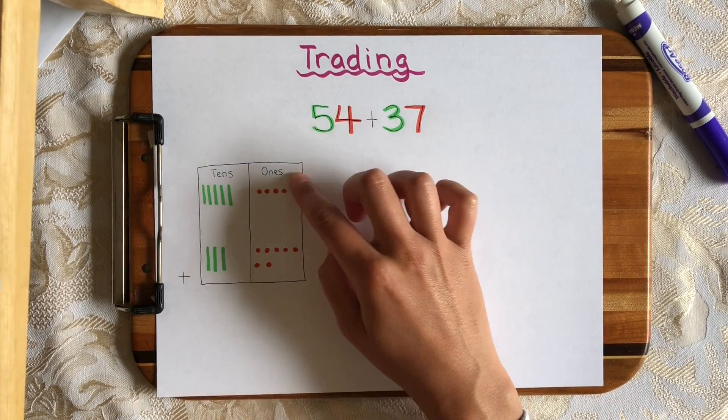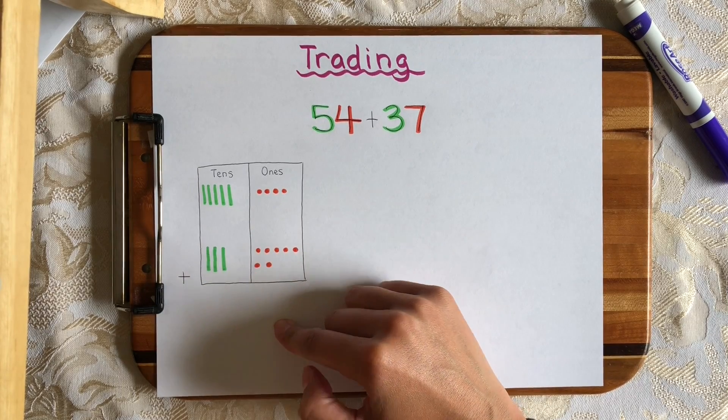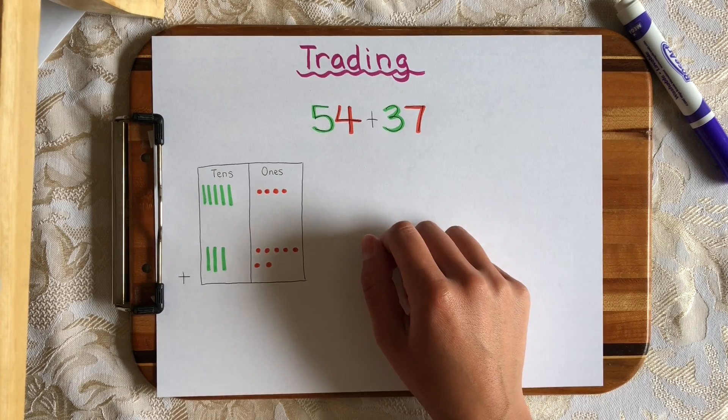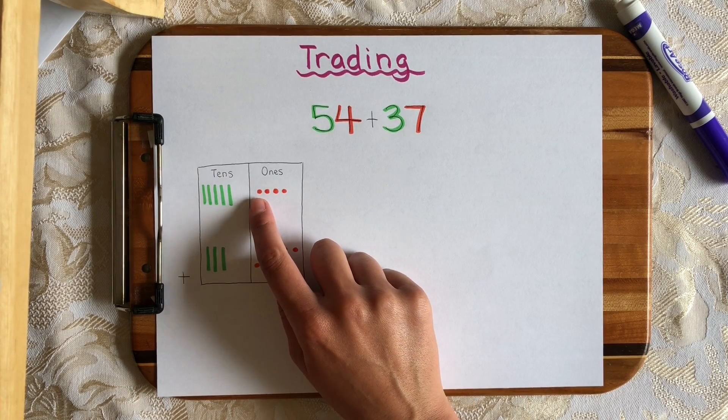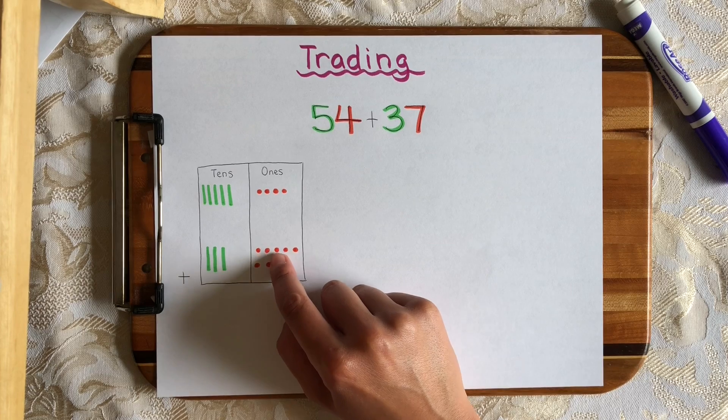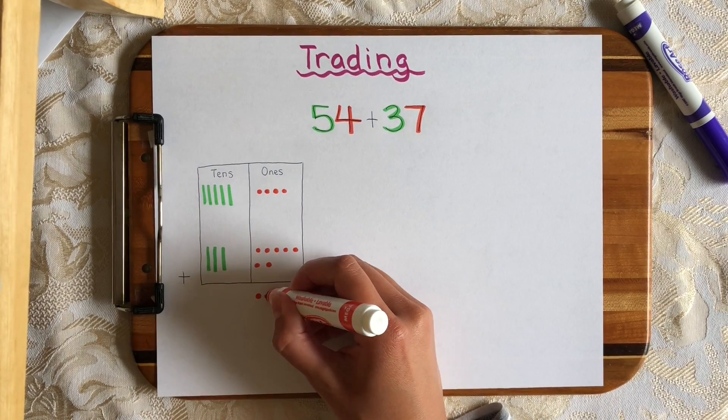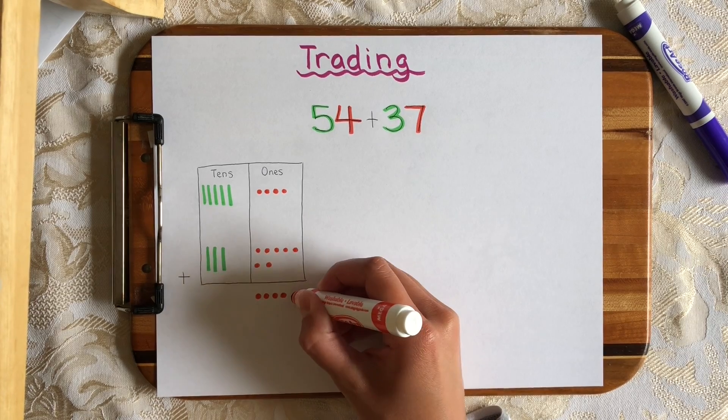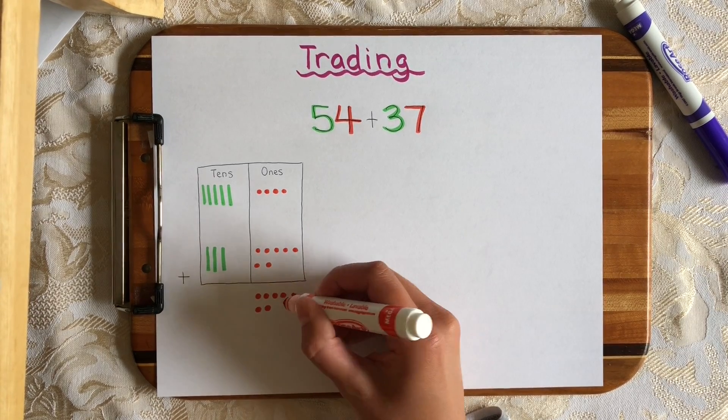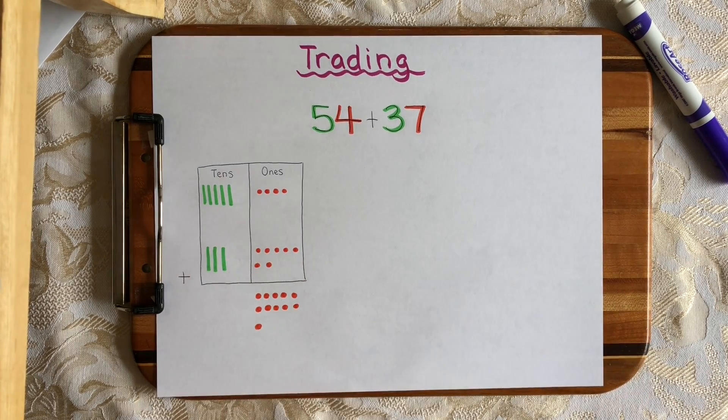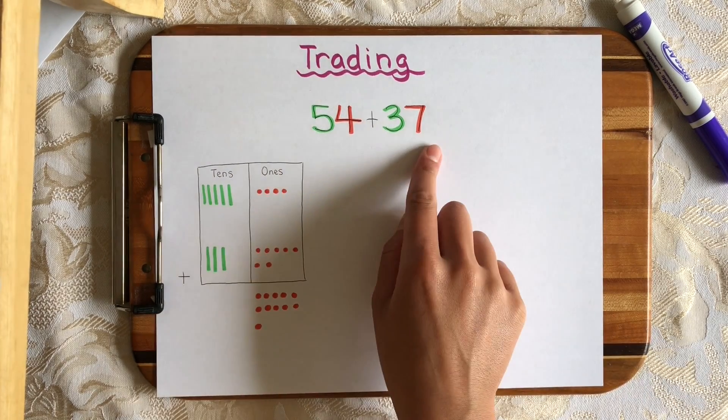Now I'm going to start by adding my ones first and I'm going to put the sum down here. So we have four ones plus seven ones. We can just go ahead and count the dots since they're there. 1, 2, 3, 4, 5, 6, 7, 8, 9, 10, 11. So I'm going to go ahead and draw that. 1, 2, 3, 4, 5, 6, 7, 8, 9, 10, 11.